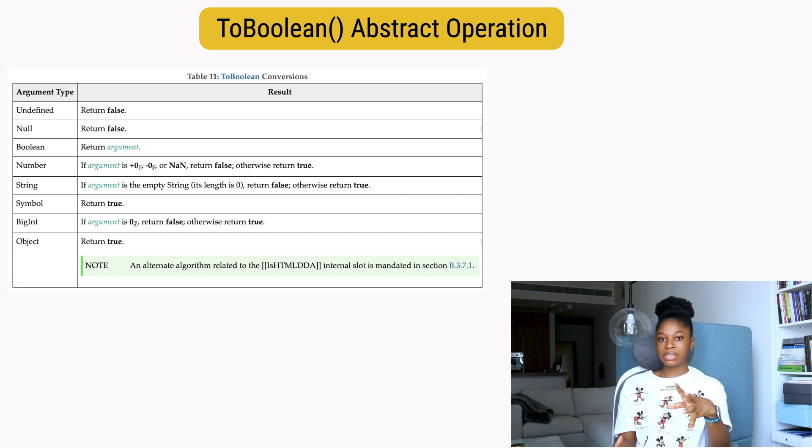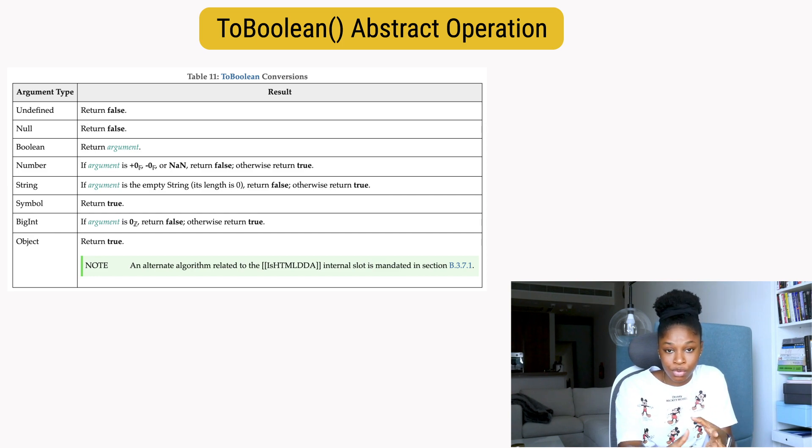The truthy value is a value that will return true when evaluated in the boolean context. If a value needs to be converted to its boolean equivalent, JavaScript just checks to see whether it's on the false list or not.